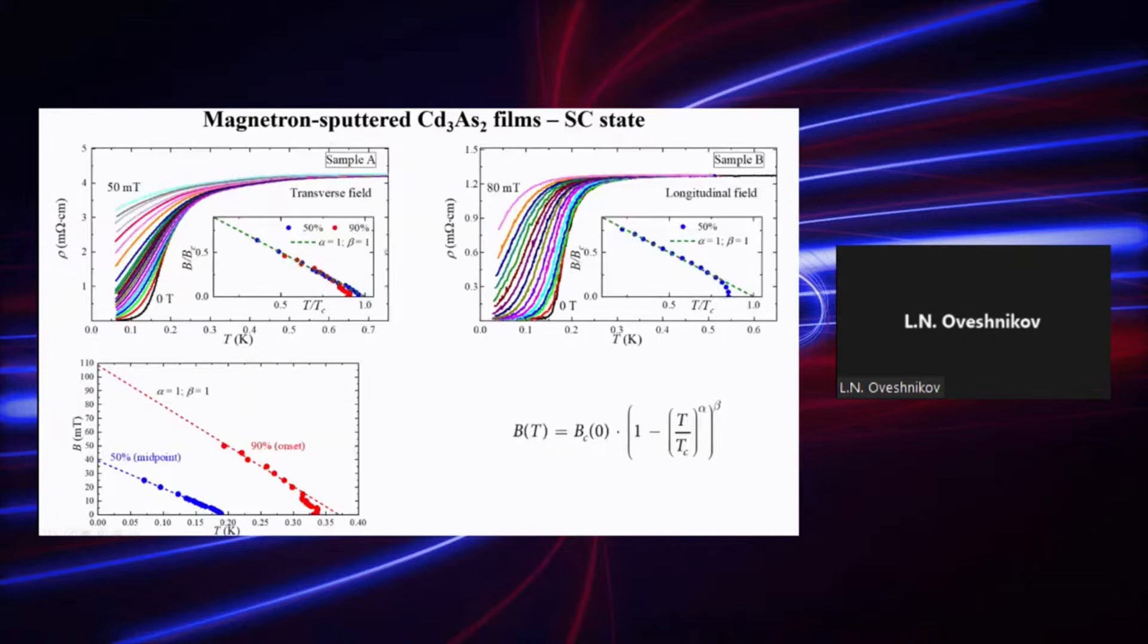As the film was cooled down to millikelvin temperature range, we observed a drastic decrease of sample resistivity. And after applying small magnetic fields, these transitions shifted at lower temperature, which is characteristic for a superconductive transition.